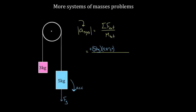You might ask: isn't the tension on the three kilogram mass making the system go? Not really — tension is an internal force exerted between objects within the system, and internal forces are always opposed by another internal force. The tension tries to move the three kilogram mass but opposes the five kilogram mass. When we treat the whole system as a single eight kilogram object, these internal forces cancel. We don't include them.